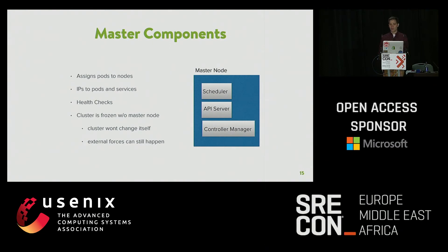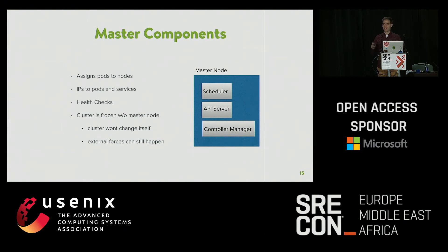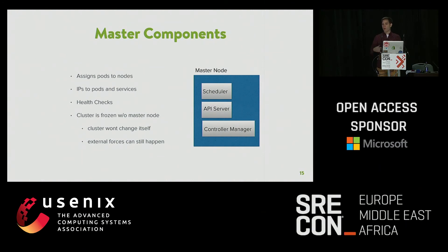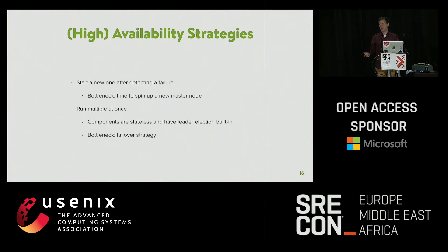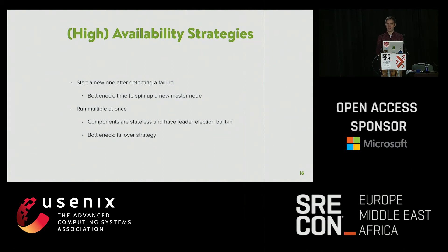The big thing to keep in mind with master nodes is: if you lose them, your cluster is frozen. Nothing can change — no scaling, no deploying. Yet external forces can still happen: you could lose a top-of-rack switch, have power outages, and you'd like to be able to react, but you can't. We deploy at peak hours every 10 minutes, so we'd be holding up our deploy train, and we also get flash sales that can happen and be over in less than 20 minutes.